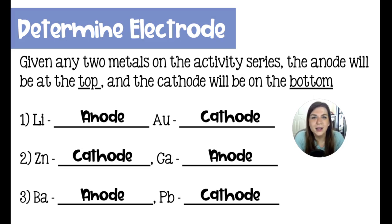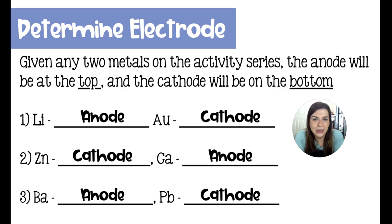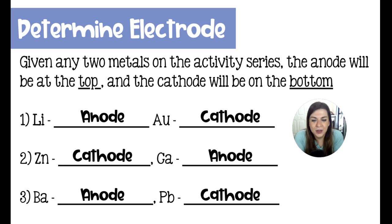Lithium is at the very top of the list and gold is at the very bottom, meaning that lithium would be the anode and gold would be the cathode. In zinc and calcium, zinc is lower on the list than calcium, meaning zinc would be the cathode and calcium would be the anode. And finally, barium and lead — not a common battery, but if we made one, because barium is higher on the list than lead, barium would be the anode and lead would be the cathode.